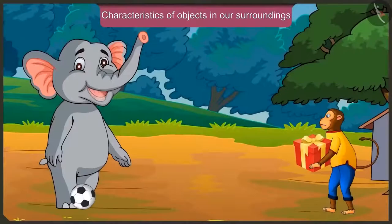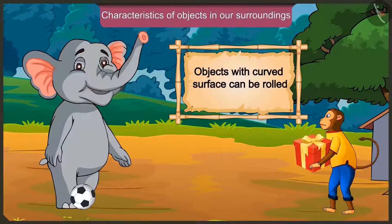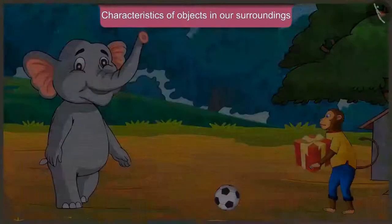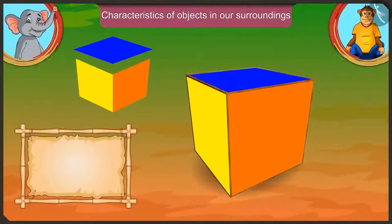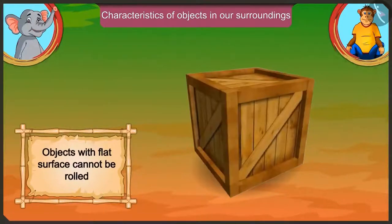Okay, I have understood that objects which have a curved surface and don't have corners can be rolled. And those objects which have a flat surface cannot be rolled. Isn't it?